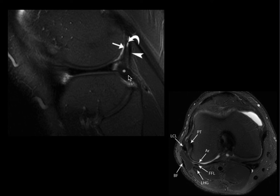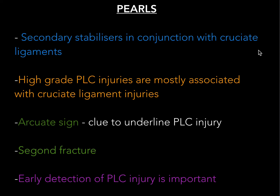These are secondary stabilizers in connection with the cruciate ligaments. High-grade posterolateral corner injuries are mostly associated with cruciate ligament injuries, so we need to look for all posterolateral corner structures as well. The arcuate sign is an important clue on X-ray indicating underlying posterolateral corner injury. The Segond fracture is another osseous fracture that indicates we need to evaluate the posterolateral corner anatomy. Early detection of posterolateral corner injury is very important because of the devastating consequences.